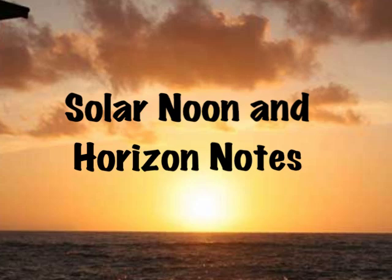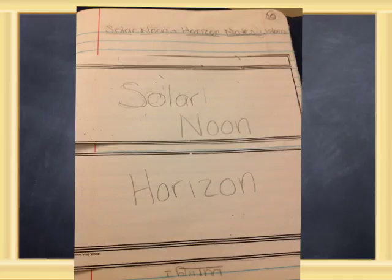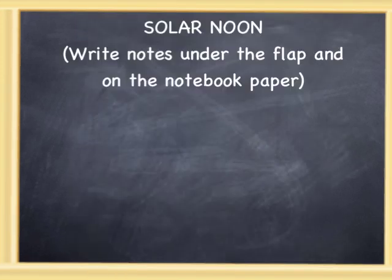The last set of notes we're going to cover deals with solar noon and the horizon. Please write the words 'solar noon' on the top flap and 'horizon' on the bottom flap. Then flip up the flap where you wrote the term solar noon. You're going to write the explanation about solar noon on the notebook paper underneath the flap.